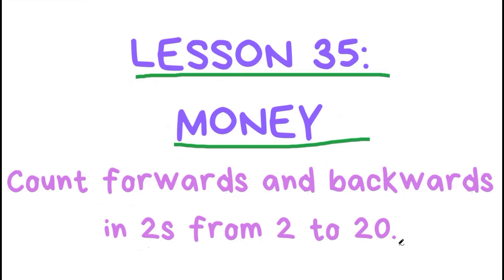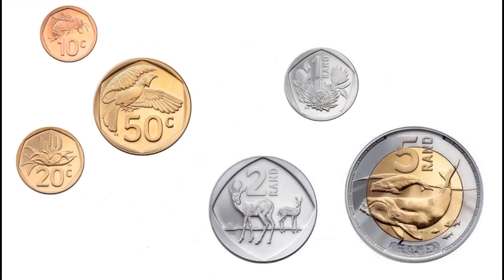We count in 2s 10 times to get to 20. Now let's look at money. We are going to look at coins — these 6 coins.